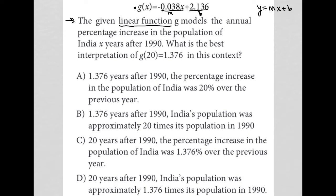So, the given linear function g models the annual percentage increase in the population of India x years after 1990. What is the best interpretation of g of 20 equals 1.376?